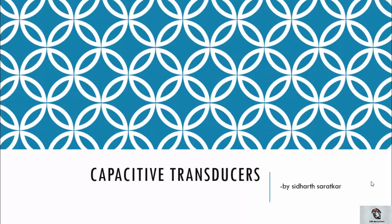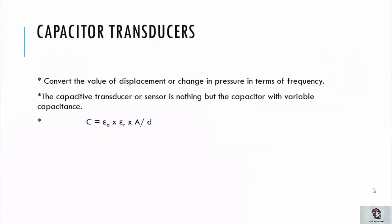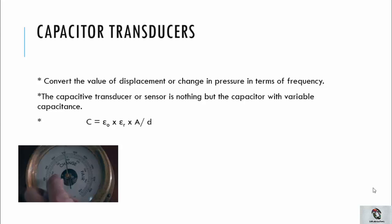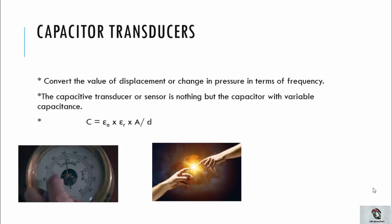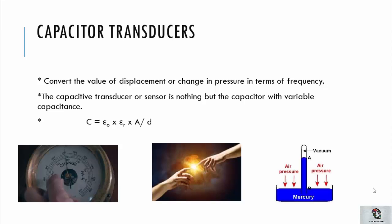So let's begin. A capacitor transducer converts the value of displacement of the capacitor plate, or change in pressure through an external force — which may be a human contact or air pressure — in terms of frequency.